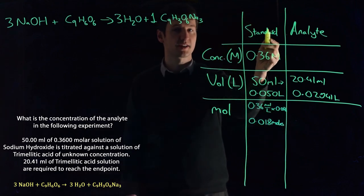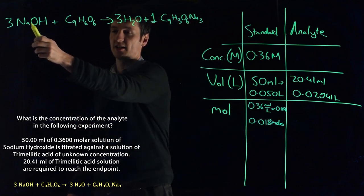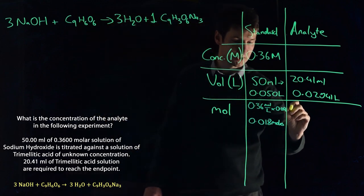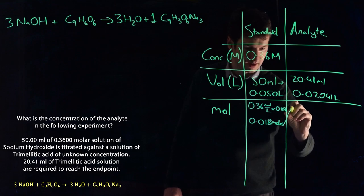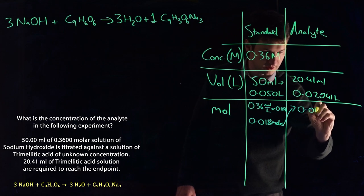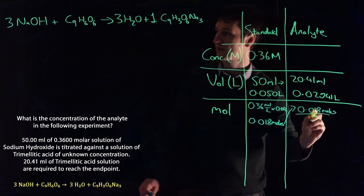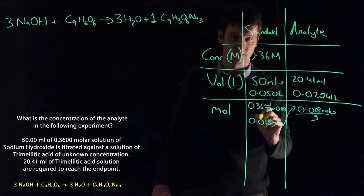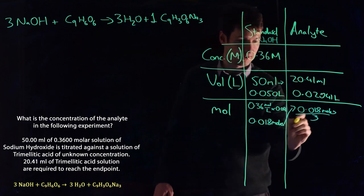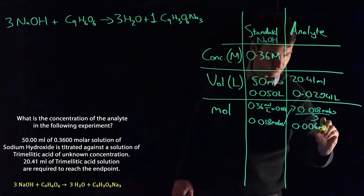So we know how many moles of standard it took. It took 0.018 moles. And we know for every three moles of standard we put in, we had one mole of analyte. So let's work out how much analyte we had. Well, it's going to be this number divided by three. So 0.018 moles divided by three, because it's three of these for every one of these. So divide the number of sodium hydroxides, our standard is our sodium hydroxide, divide that by three and we get 0.006 moles.